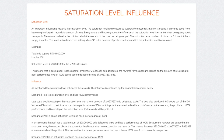The saturation level is a measure to support the decentralization of Cardano — it prevents pools from becoming too large in regards to the amount of stake delegated. The saturation level is the point at which the rewards of the pool are being capped. It can be calculated as follows: take the total ADA supply and divide it by the k value, where k is the number of pools upon which the saturation level is based. For example, with the total ADA supply at 31.7 billion divided by the current k value of 150, the output is 210 million ADA — meaning if a stake pool reaches 210-plus million ADA delegated, it has become saturated and rewards are capped at that level.